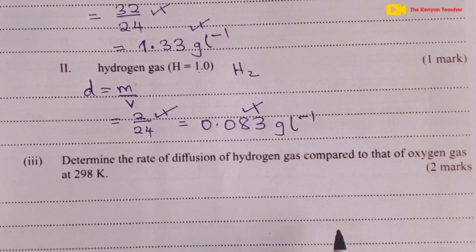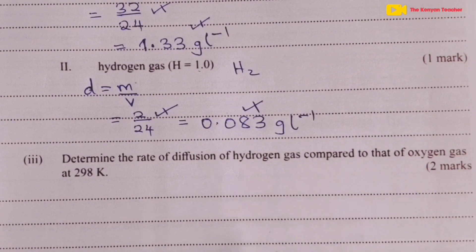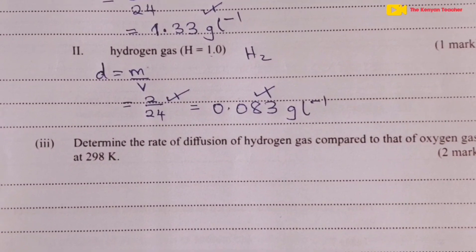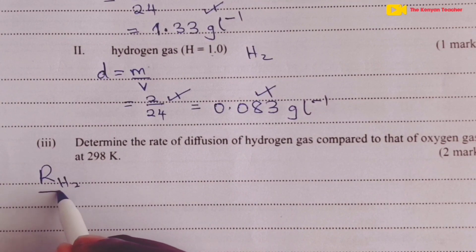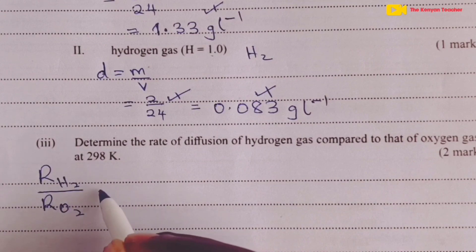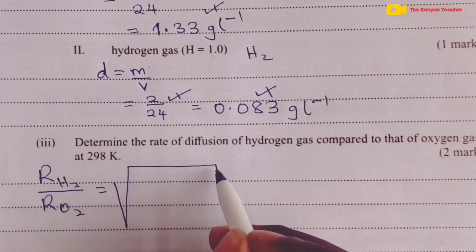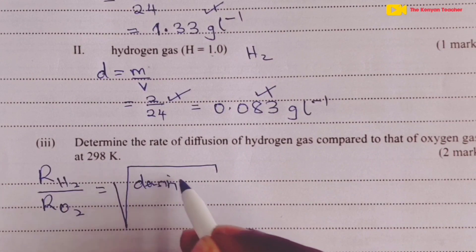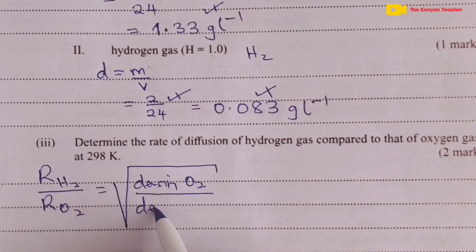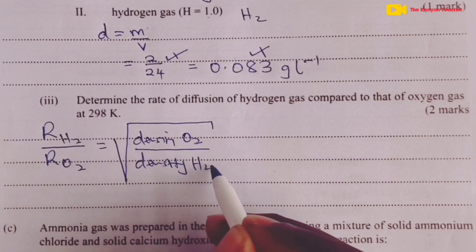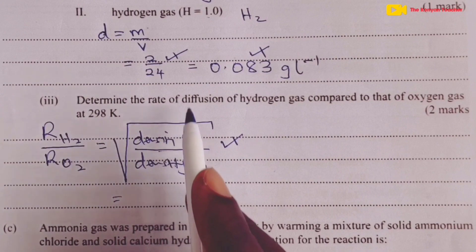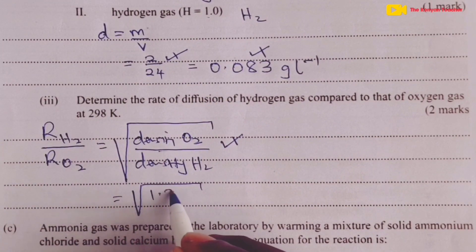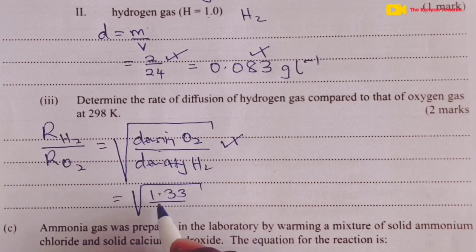For part 3, we determine the rate of diffusion of hydrogen compared to oxygen at 298 K. We use: rate(H2)/rate(O2) = √(density of O2 / density of H2). This relation earns the first half mark. Substituting: density of O2 = 1.33, density of H2 = 0.083.